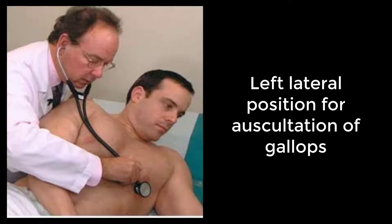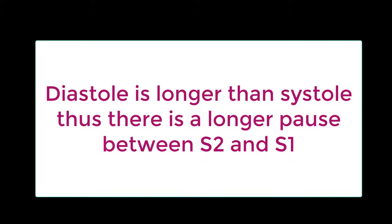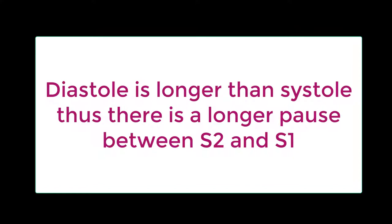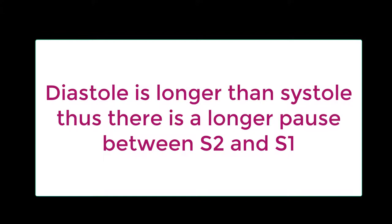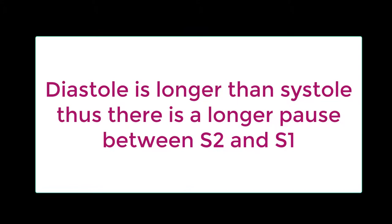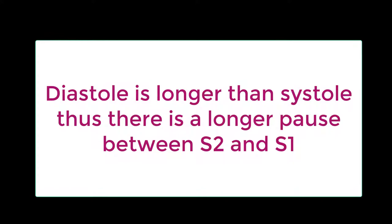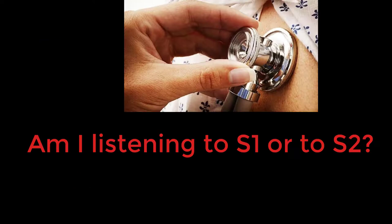When listening to a patient's heart, the cadence of the beat will usually distinguish S1 from S2. Because diastole takes about twice as long as systole, there is a longer pause between S2 and S1 than there is between S1 and S2. Sometimes rapid heart rates can shorten diastole to the point where it is difficult to discern which is S1 and which is S2.